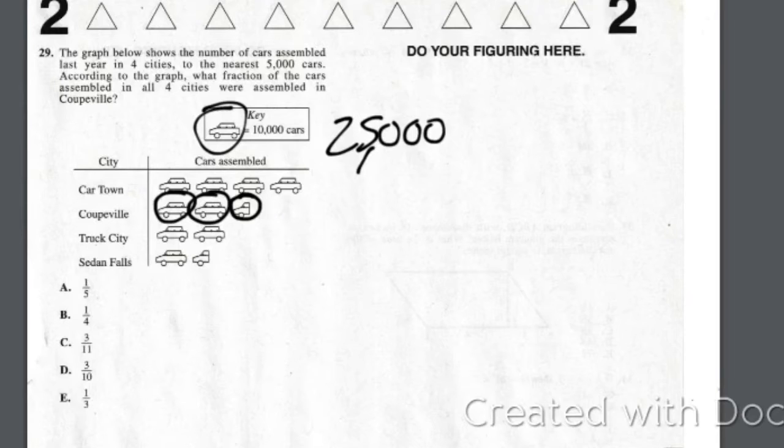So according to the graph, what fraction of the cars were assembled in Coopville? So it's 25,000 all over. 25,000 all over. Okay, right here.